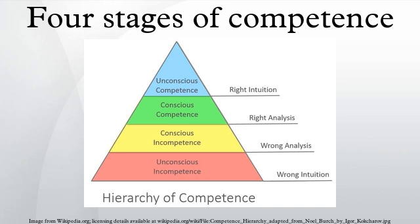The four stages of learning provides a model for learning. It suggests that individuals are initially unaware of how little they know, or unconscious of their incompetence. As they recognize their incompetence, they consciously acquire a skill, then consciously use it. Eventually, the skill can be utilized without it being consciously thought through, and the individual is said to have acquired unconscious competence.